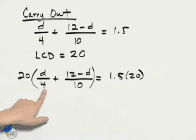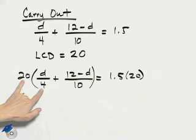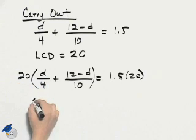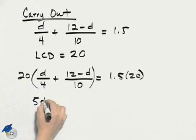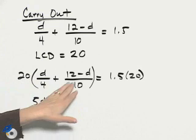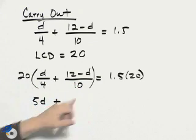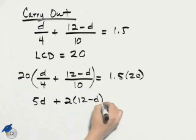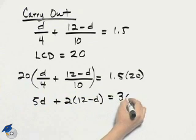I can take 20 times each piece then. 20 times D over 4, notice that the 20 and the 4 has a common factor, so we end up with 5D. 20 times 12 minus D over 10, the 20 and the 10 reduce to just a 2, so I'll have 2 times 12 minus D, and 1.5 times 20 is 30.